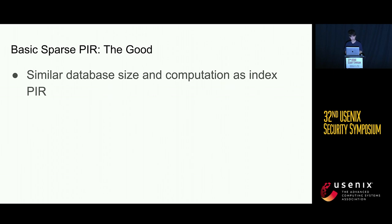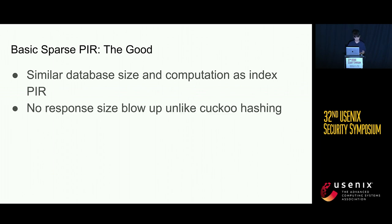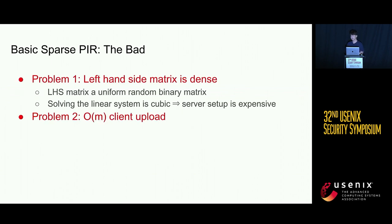What is good about this? If m is similar to n, it has basically similar database size and computation as the index PIR. More importantly, this has no response size blowup, unlike prior keyword PIR frameworks. However, there are problems. The first problem is that the left-hand side matrix used to construct the encoding is very dense, assuming the hash function is uniform. Solving the linear system is then essentially cubic, making server setup very expensive. Another problem is that this incurs a linear-size upload from the client, which we also want to avoid.